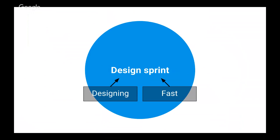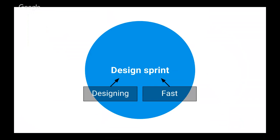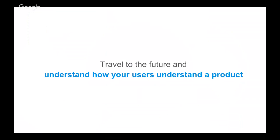Even though design sprints are a somewhat new methodology, they're based on things you might already be familiar with — brainstorming, innovation workshops, hackathons, and ideation sessions — but turned into something that gives you a really tangible outcome. The key is in the name: it's all about designing fast. What you get out of a design sprint is this superpower opportunity to travel into the future and understand how users understand your product. Normally when you develop products, you start with an idea, build it, launch it, and then learn. A design sprint shortcuts between the idea and the learning, skipping the expensive building and launching phase. On average, five days of a design sprint is like four to six weeks of engineering and product development time.